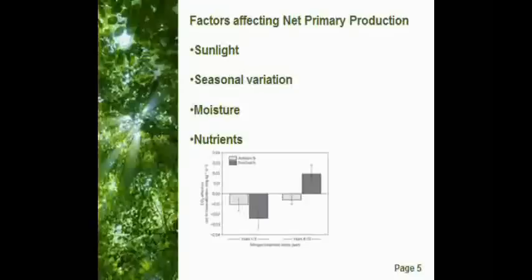There are some factors that can influence NPP. The first one is sunlight. As you can see in the global NPP distribution graph shown before, in the tropical area where sunlight is most sufficient, NPP is the highest. The second factor is seasonal variation.